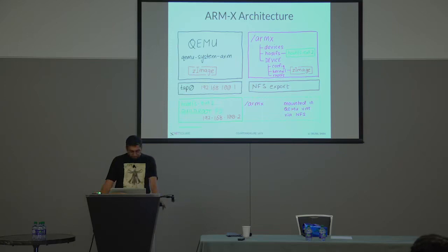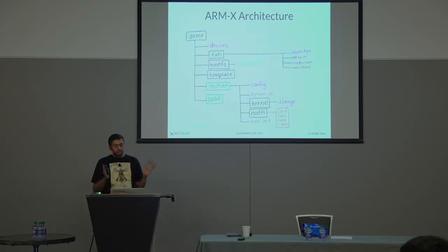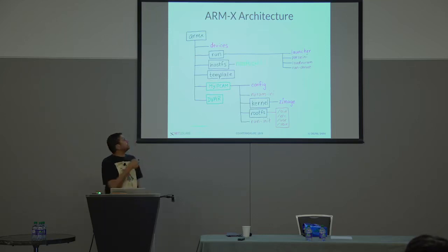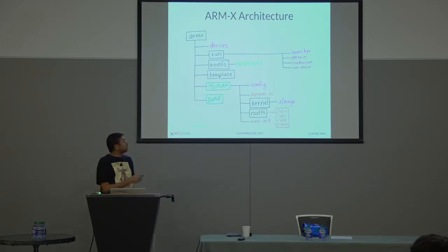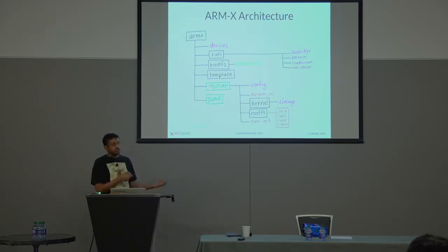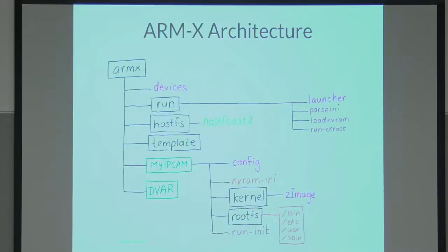Everything is a nice hierarchical directory tree. The main database is called 'devices' where you can create and add your own devices. The host filesystem is always just one — there's only one hostfs ext2 file with all the tools. All new devices are created under their own template. Each device has its own config, its own copy of NVRAM which gets populated before boot, a kernel generated using buildroot, and the root filesystem extracted straight from the device.